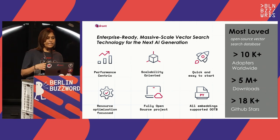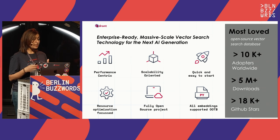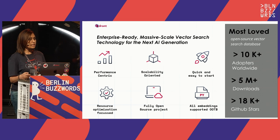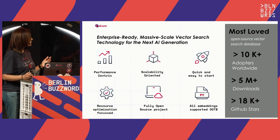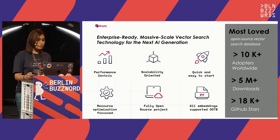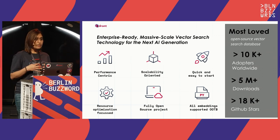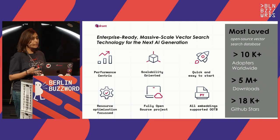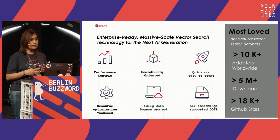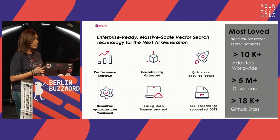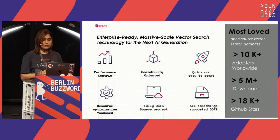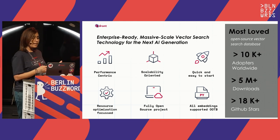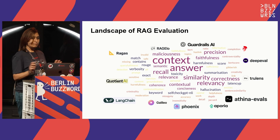Why do we need to make a meticulous choice about this framework or tool? It has to be very performance-centric. Quadrant is based on Rust, which is why you can trust the performance. It's scalability-oriented, quick and easy to start with. When we talk about RAG, we talk about knowledge management on a huge amount of text or documents, which is where resource optimization through supporting different ways of quantization comes in. It's a fully open-source project — you can build whatever you want with it, and all the embeddings are supported out of the box. Marketing over.